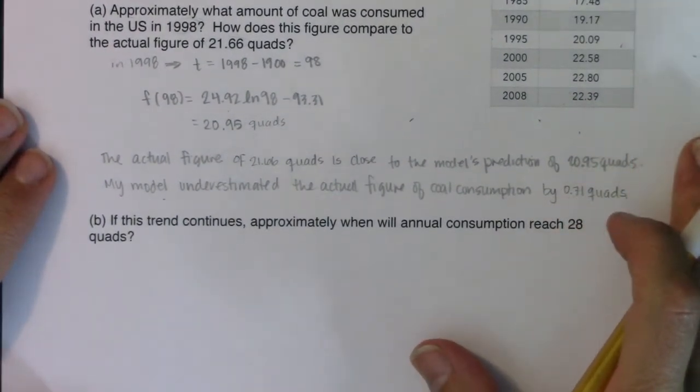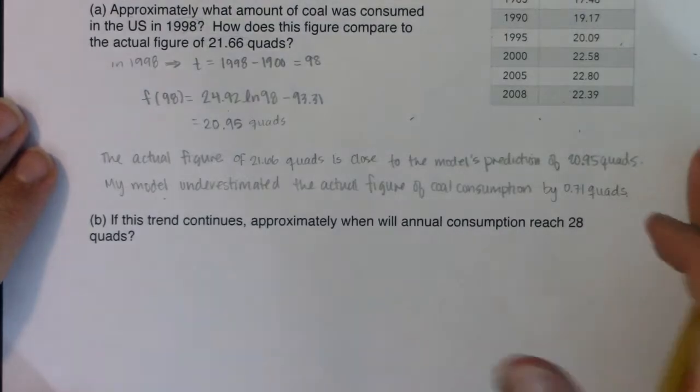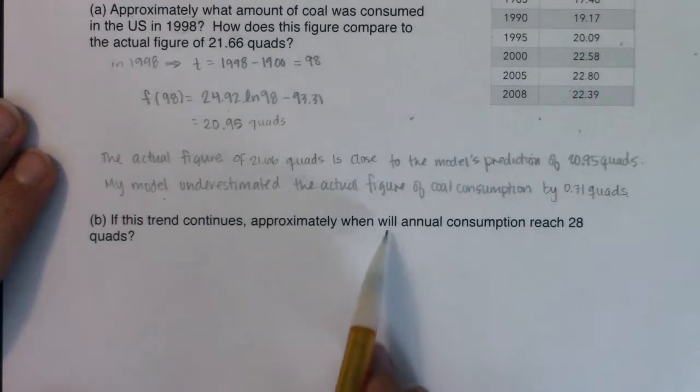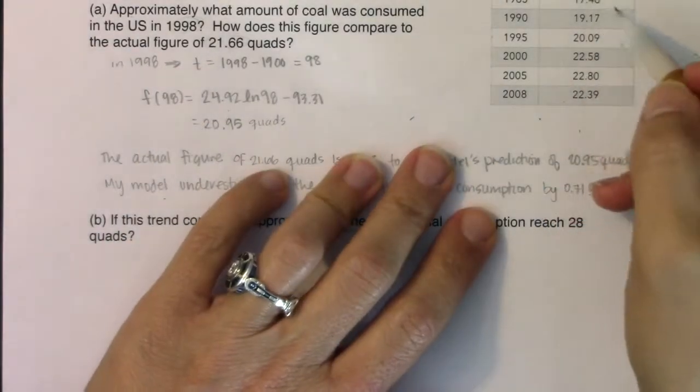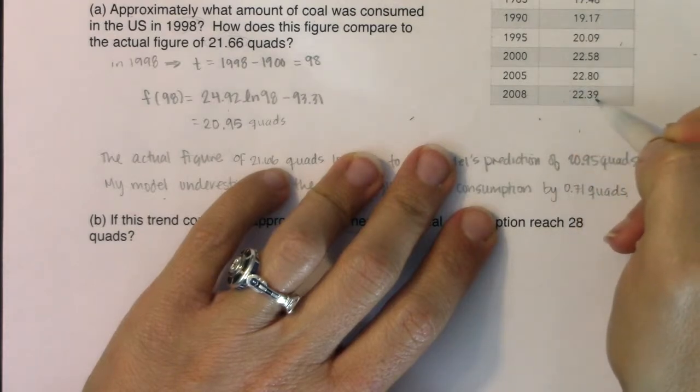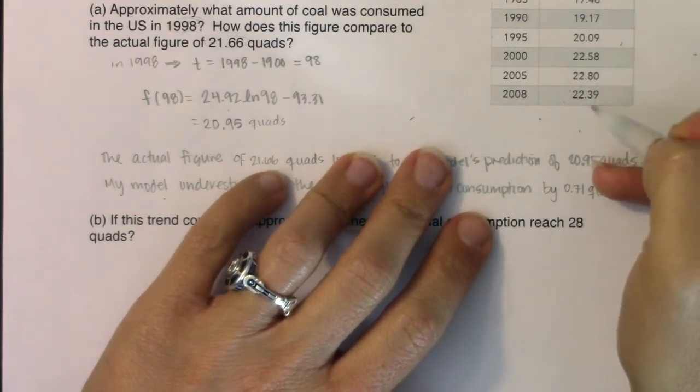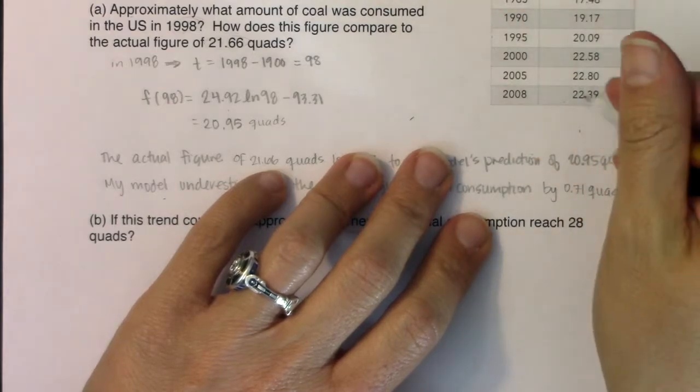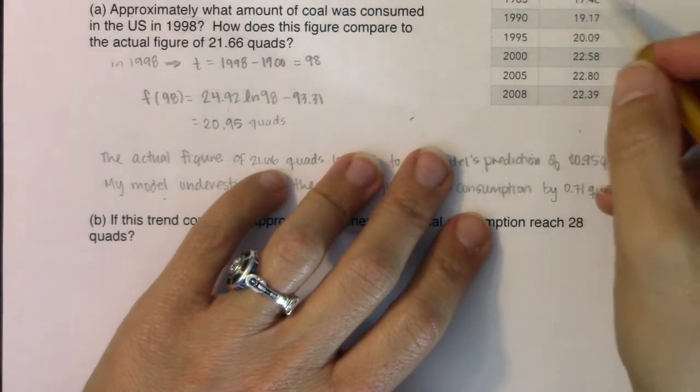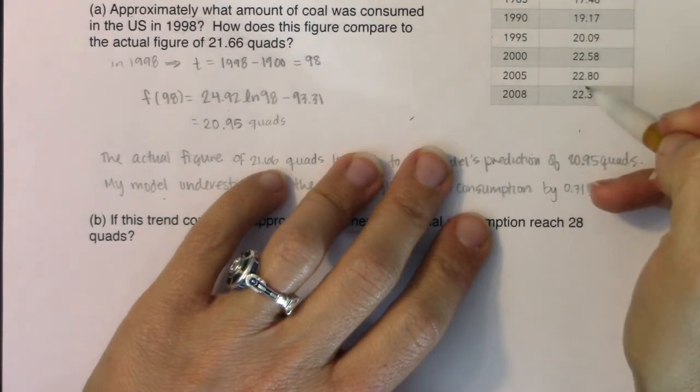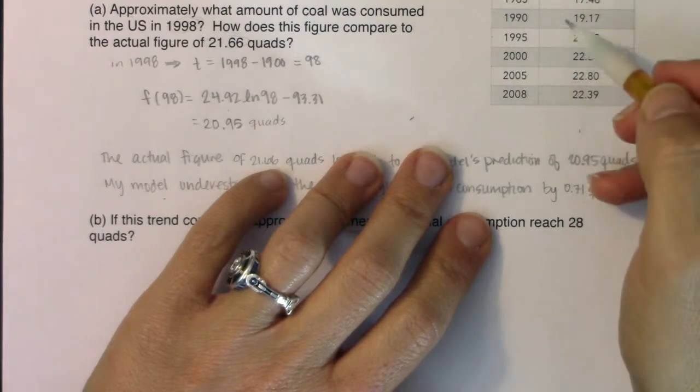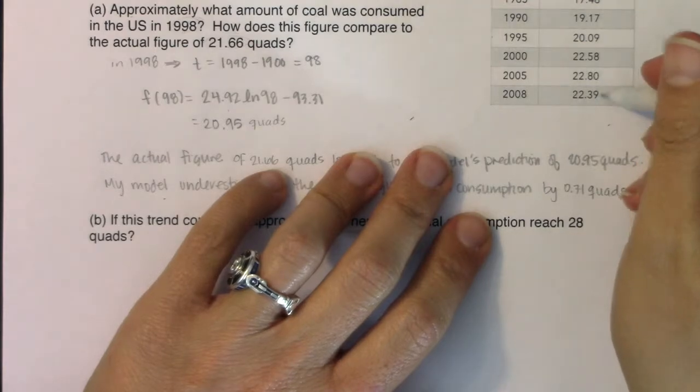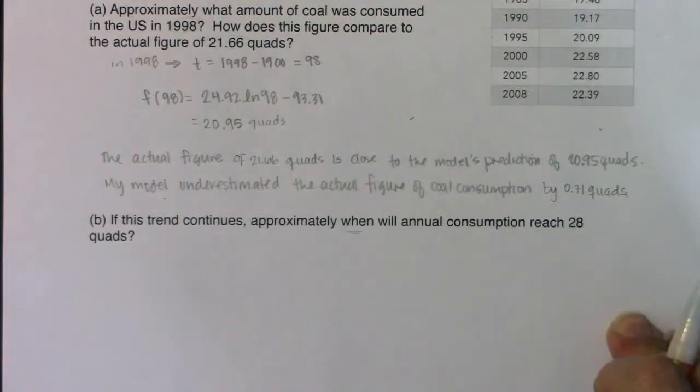So moving along from there, I'm going to scooch this up just so we can read the second question. This says, if this trend continues, approximately when will the annual consumption reach 28 quads? Now, if I'm looking at my data, you can't quite see the top, I've cut it off, but you see in 2008 I'm at 22.39, and this is increasing by a little bit but it's not increasing by a ton. So when do I think I'm going to hit 28 quads? Well, it took me 28 years just to grow seven quads and I want to grow another seven, so I'm thinking it'll be like 2040 maybe before I get there. It's pretty far down the future, but let's see when that would happen.